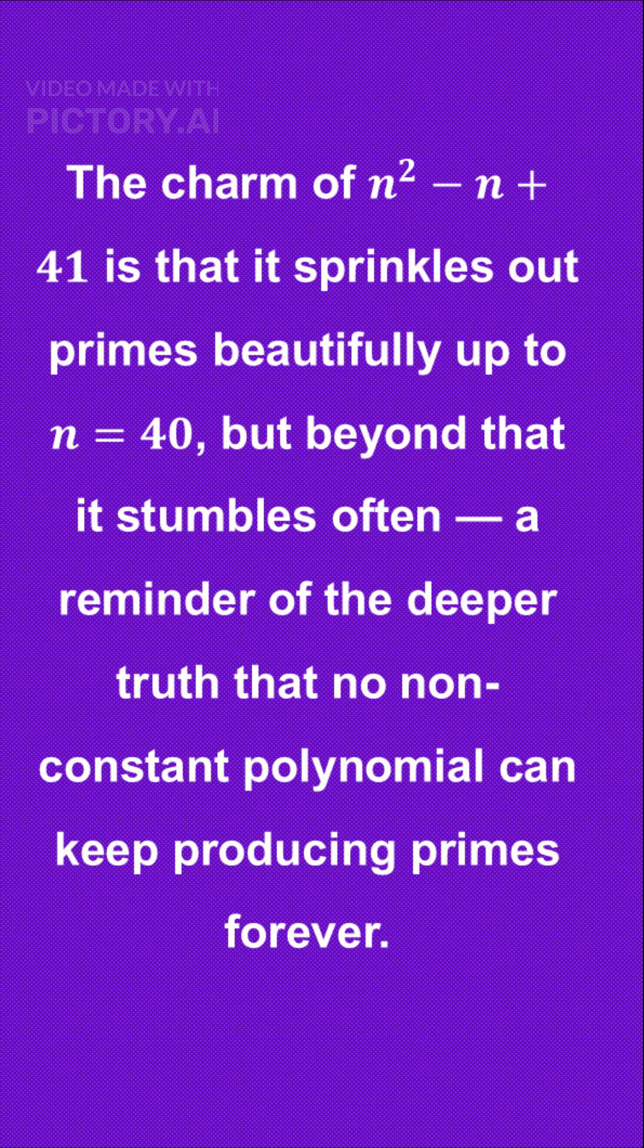The charm of n² - n + 41 lies in its ability to sprinkle out primes beautifully up to n = 40. But beyond that, it stumbles often, reminding us of the deeper truth that no non-constant polynomial can keep producing primes forever.